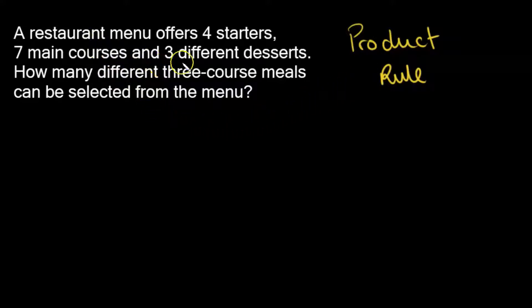Let's take a look at this question I have here. A restaurant menu offers four starters, seven main courses and three different desserts. How many different three-course meals can be selected from the menu? So let's try and get this information down somehow. Let's say we have our starters in one column, our main courses in the second, our desserts in the last. So how many different possibilities do I have for my starter? Well, that is going to be four.